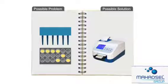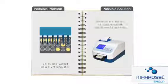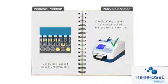Also, wells that are not evenly washed may lead to a high variation between wells. If using a plate washer, please check to confirm it is working properly and pipette tips are not obstructed.